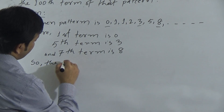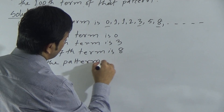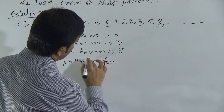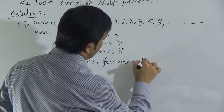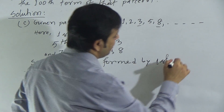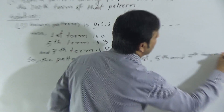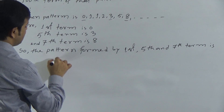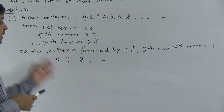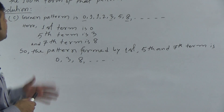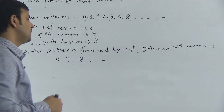So the pattern formed by the 1st, 5th, and 7th terms is: 0, 3, 8, and the pattern continues in this way. To find the hundredth term, we first need to find the algebraic expression for this pattern.